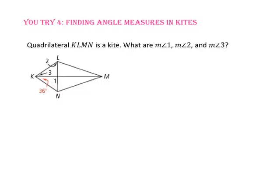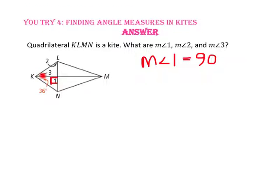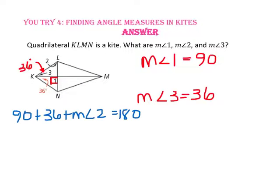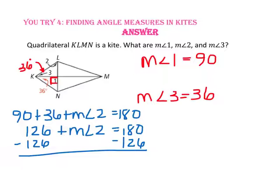Pause the video and do U-try number 4. Quadrilateral KLMN is a kite. What are the measures of angles 1, 2, and 3? The diagonals of a kite are perpendicular, so the measure of angle 1 is 90. Since diagonal KM bisects these angles, the measure of angle 3 is 36 degrees. Using the triangle angle sum theorem, 90 plus 36 plus the measure of angle 2 equals 180, so 126 plus angle 2 equals 180, and the measure of angle 2 equals 54.